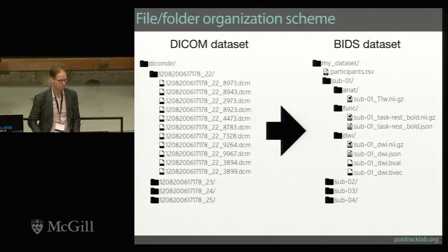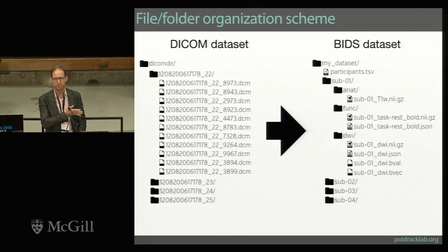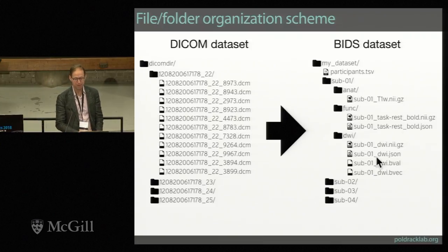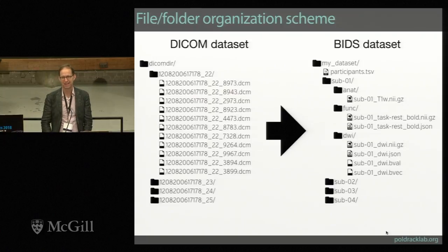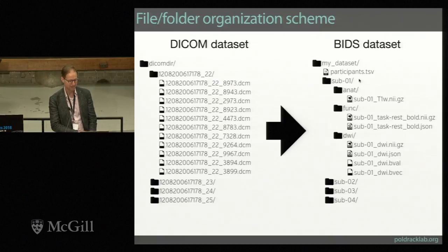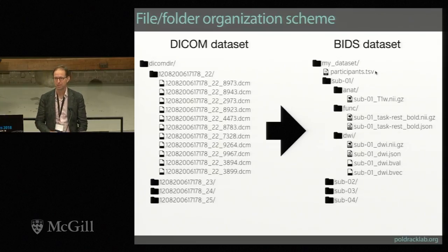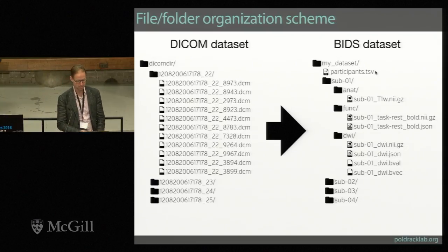The fundamental idea of BIDS is basically going from DICOM coming off the scanner — organized in a relatively non-transparent and not human-interpretable way — to something where you don't really need to know anything to look at it and be able to tell: these are subjects, this is an anatomical image, this is a functional image, that's a diffusion image, and participants.tsv probably has information about the people in the study. That's the basic idea of what a BIDS dataset looks like.